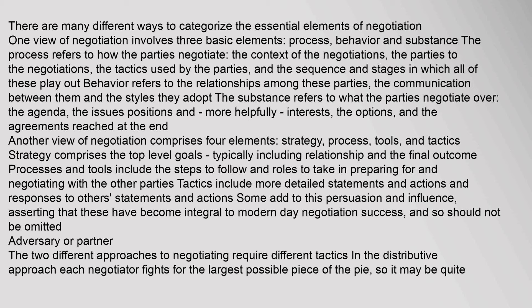Another view of negotiation comprises four elements: strategy, process, tools, and tactics. Strategy comprises the top-level goals, typically including relationship and the final outcome. Processes and tools include the steps to follow and roles to take in preparing for and negotiating with the other parties. Tactics include more detailed statements and actions and responses to others' statements and actions. Some add persuasion and influence, asserting that these have become integral to modern-day negotiation success.